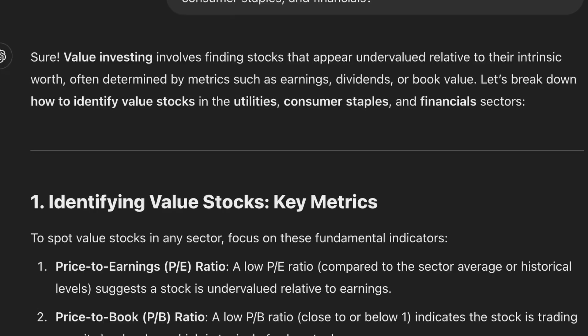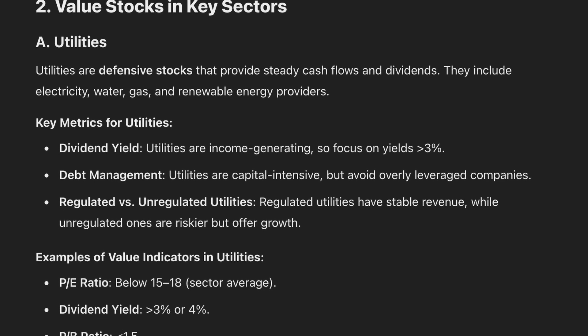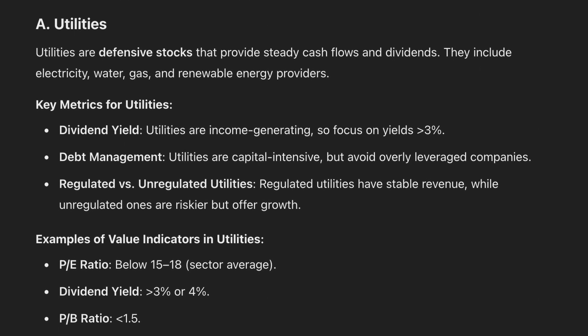ChatGPT started walking me through how to identify value stocks and the key metrics that go into it: price-to-earnings ratios, price-to-book, dividend yield, debt levels, free cash flow, and earnings stability. After that, it offered the specific metrics to use in each sector to evaluate these criteria. PE can mean many different things in different sectors, but it identified where PE, dividend yield, and price-to-book should be to be considered a value stock within utilities, consumer staples, and financials — and the thresholds are different for each sector. It then identified a few different companies in each of these sectors to invest in.